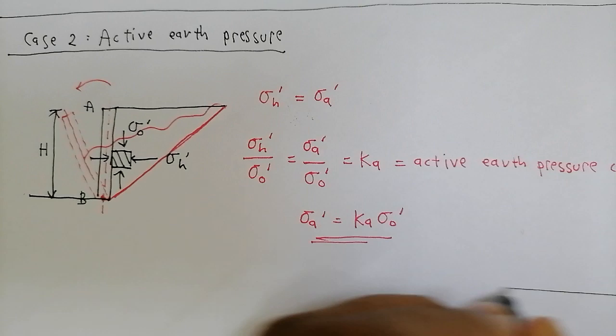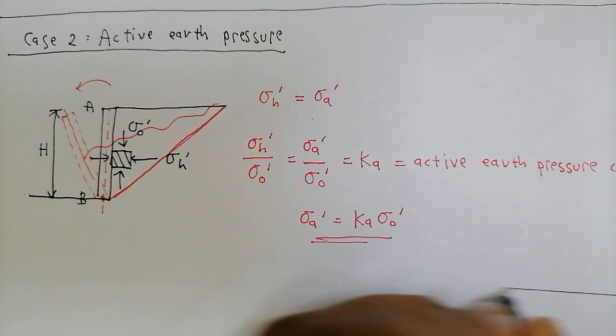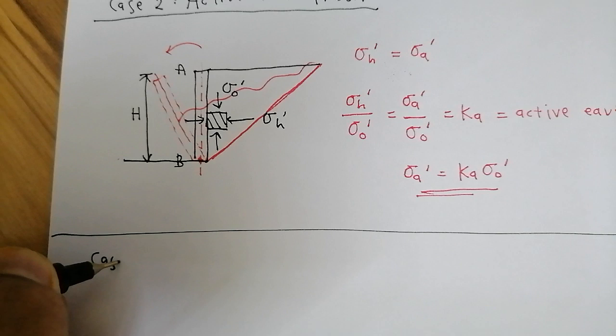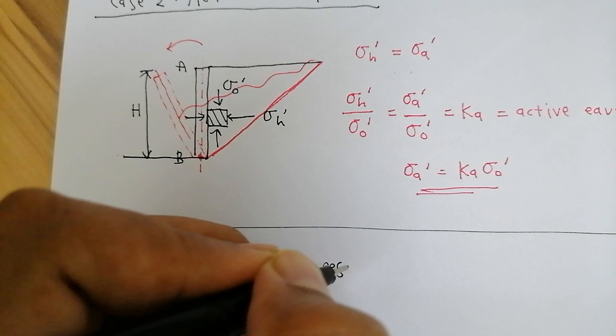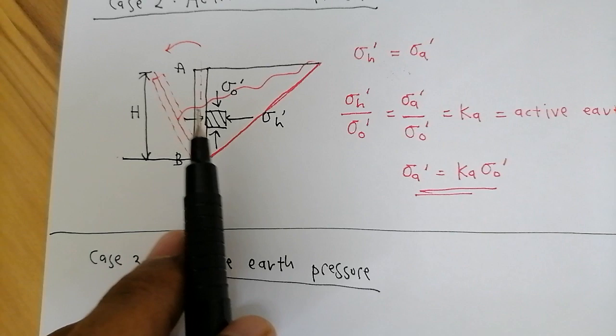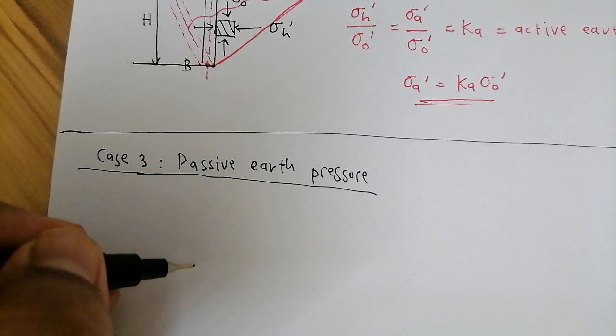Now for the final case — case three: passive earth pressure. Since active involves the wall moving away from the soil, you can probably guess what passive means. I'm going to draw the same retaining wall one more time, supporting the same soil mass.